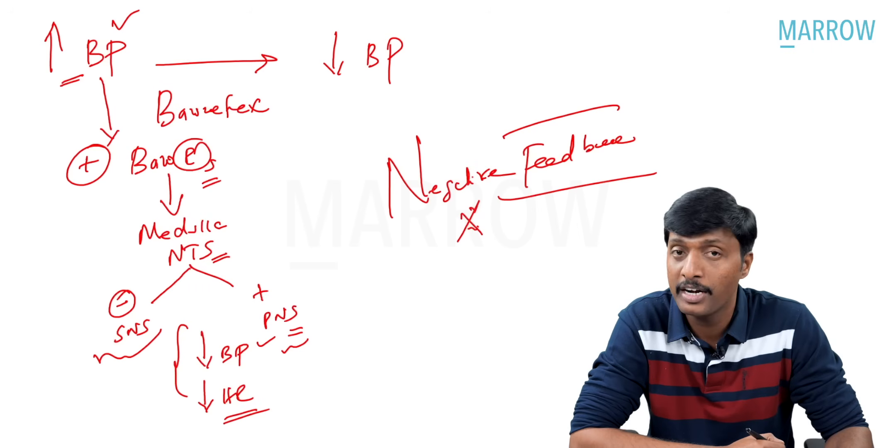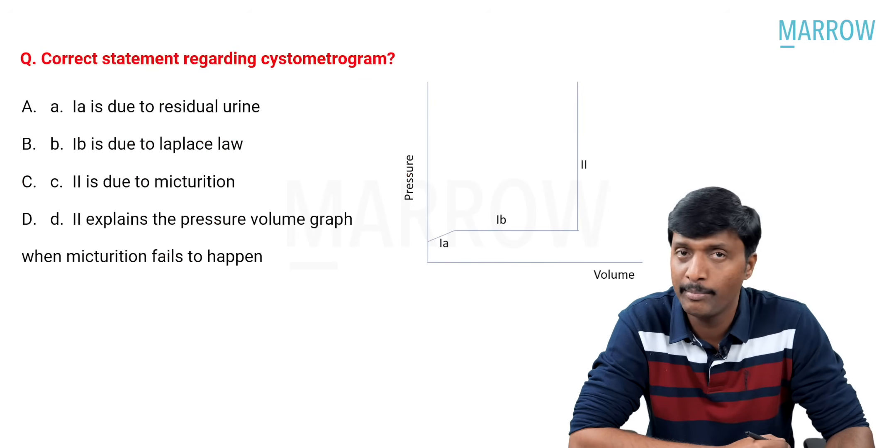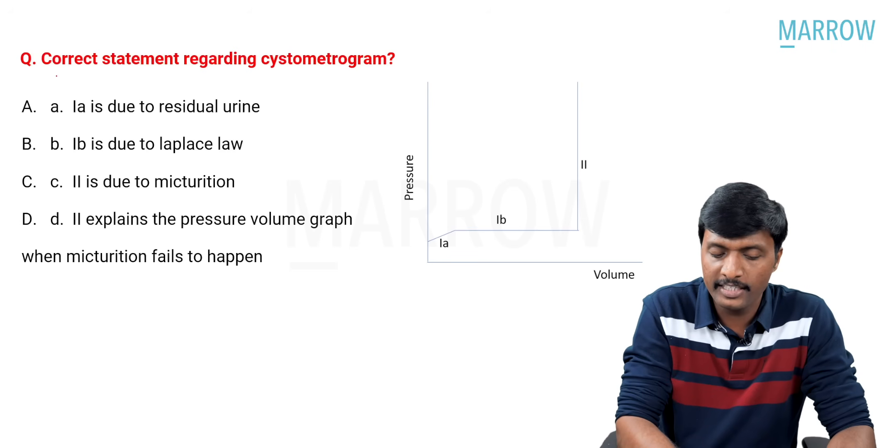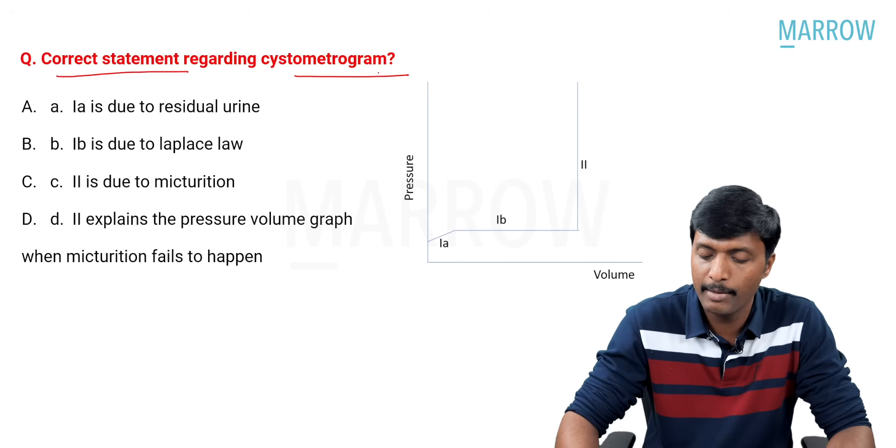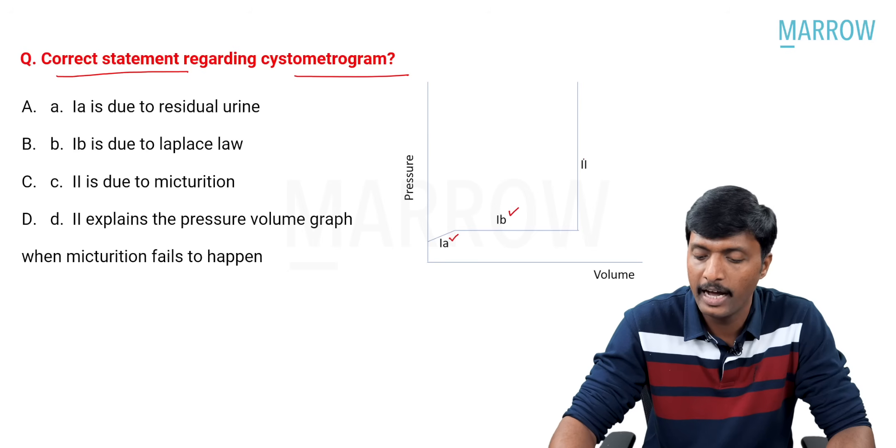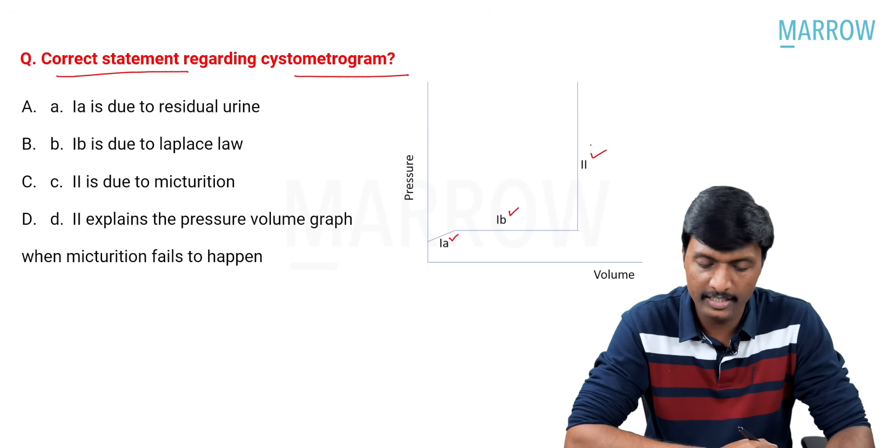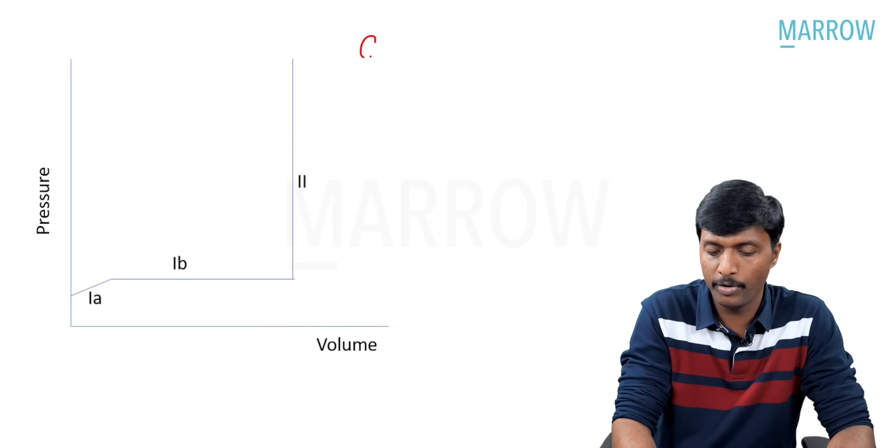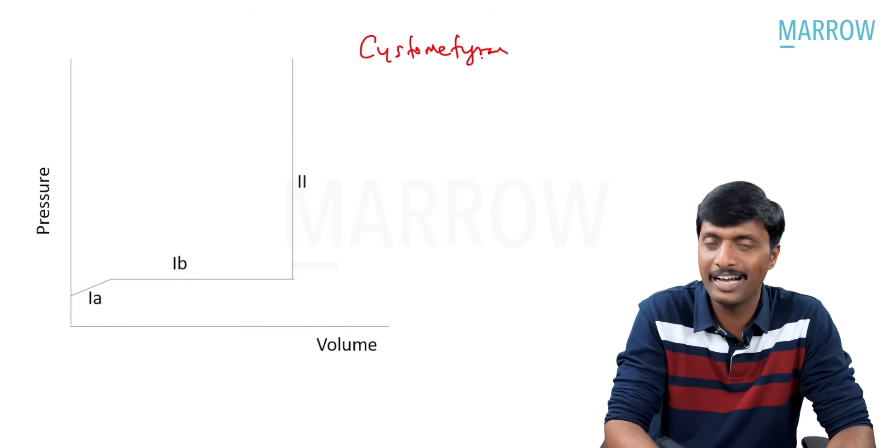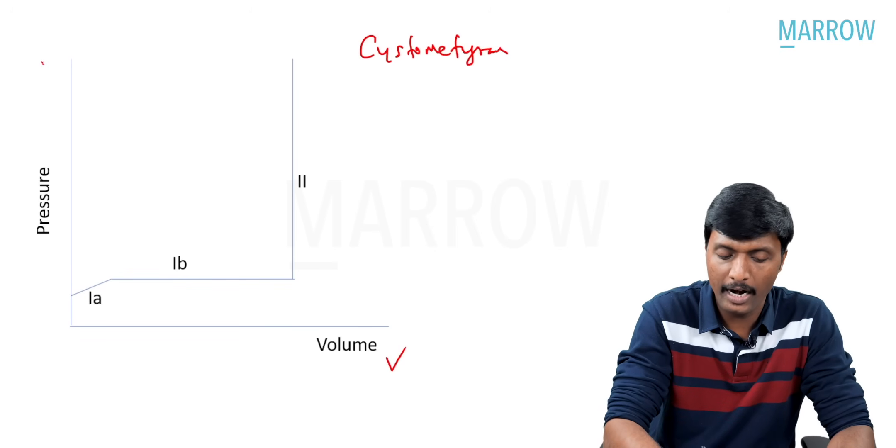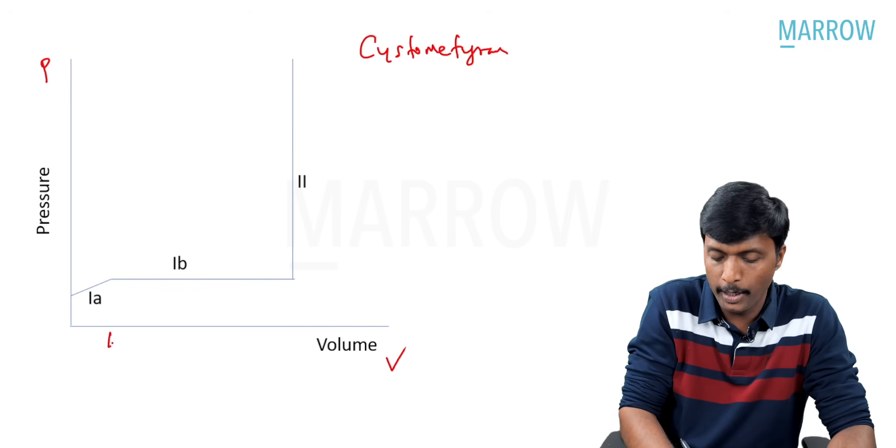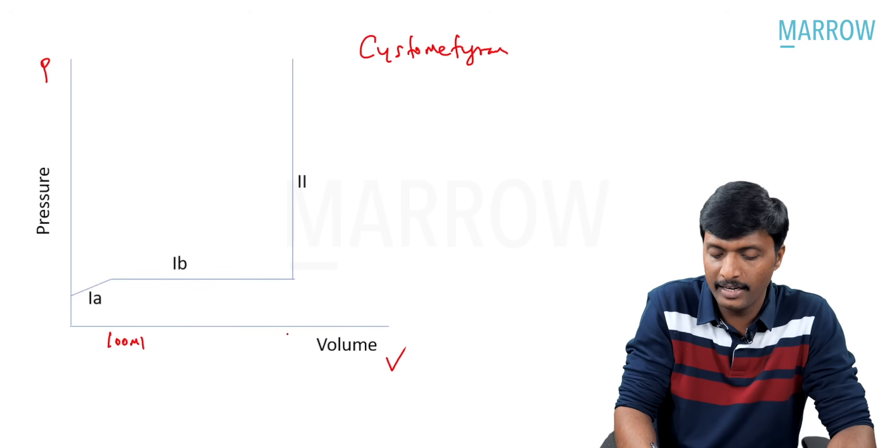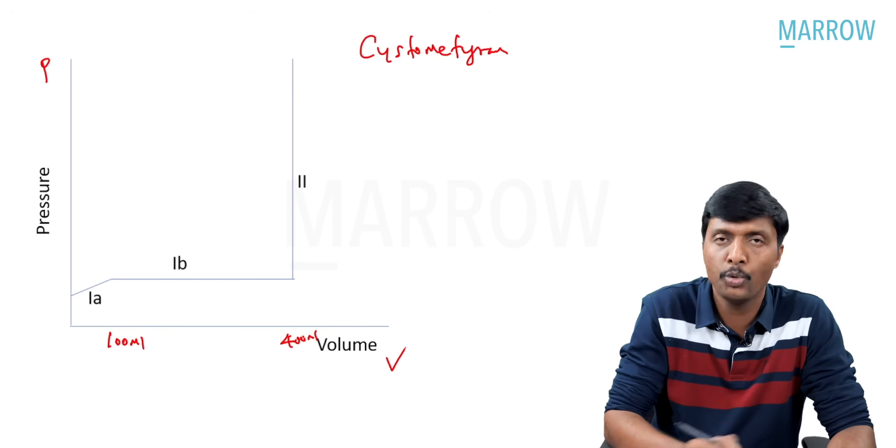We have a very important discussion on this. Next, another picture based MCQ. Correct statement regarding cystometrogram. We have segments 1A, 1B and 2. What is this cystometrogram, sir? Very important. Cystometrogram. Relationship between volume and pressure in bladder.